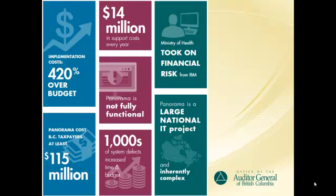This graphic from page 7 of the report summarizes some of the report highlights. A complex national IT system such as Panorama is undoubtedly a challenge to build and implement. At the time of our audit, Panorama was 420% over budget, 5 years late, and did not meet expectations. Years of delay means that Panorama may already be outdated. So far, Panorama has cost the province at least $115 million and annual maintenance costs are approximately $14 million. As well, the system contains thousands of defects, with new defects being discovered regularly.